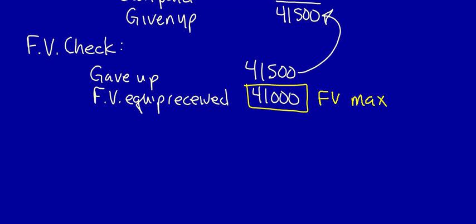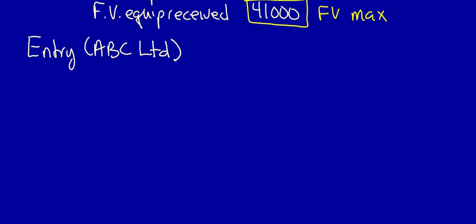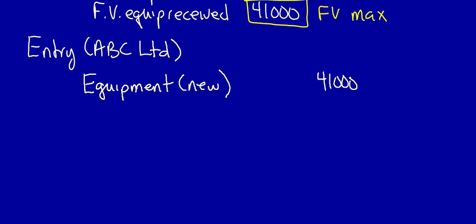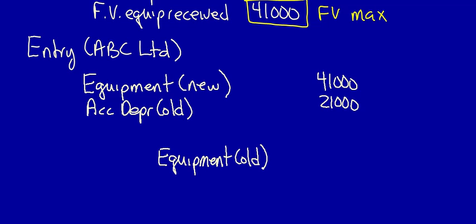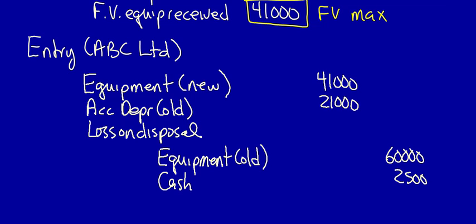Let's do the entry. First, recognize the new equipment at the maximum permitted amount: $41,000. Next, get rid of the accumulated depreciation for the old equipment: $21,000. Get rid of the old equipment: $60,000. Recognize that we had to give up cash: $2,500. This entry doesn't balance, so we therefore have to record a loss on disposal of $500.